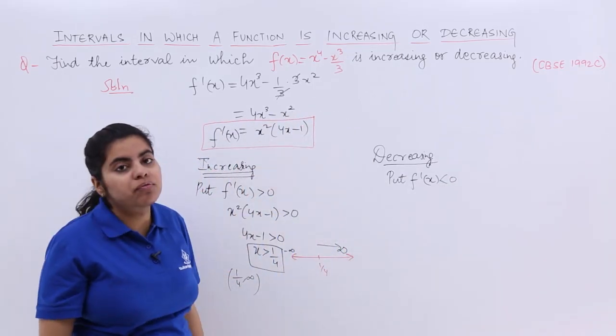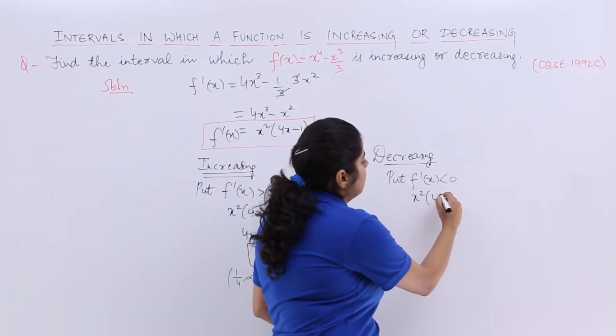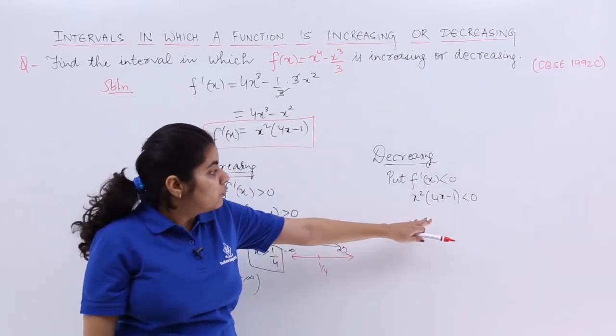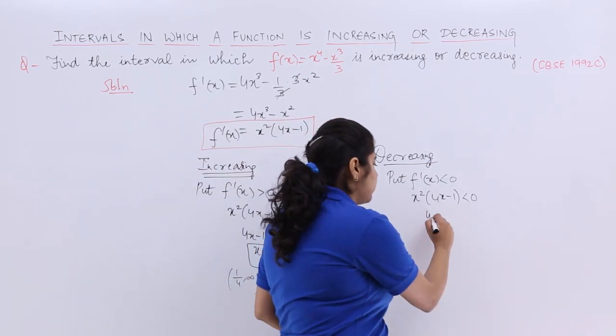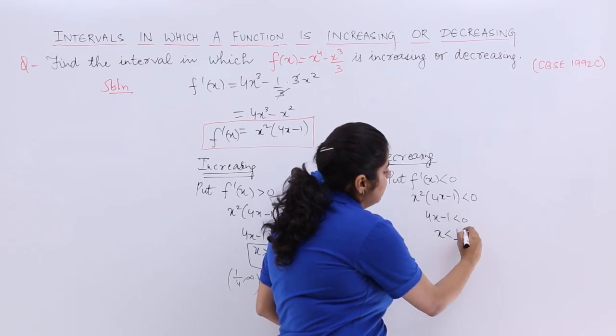What is f'(x)? x^2(4x - 1). So it is x^2(4x - 1) < 0. Now 4x - 1 if I put less than 0, that gives me x < 1/4.